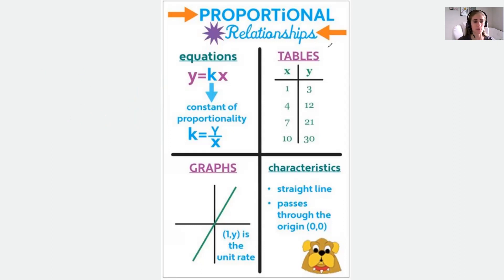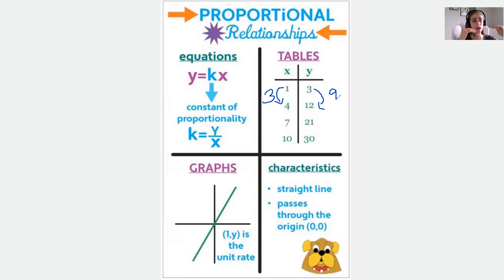Let's talk about how we can tell from a table. If we have a table of values, each set of ordered pairs needs to have the same ratio — the same increase. If our X value goes from 1 to 4, that increases by 3. And then our Y value goes from 3 to 12, which increases by 9. If I go to the next set, I should have the same pattern each time, meaning the ratios are the same — it's increasing by the same constant of proportionality.